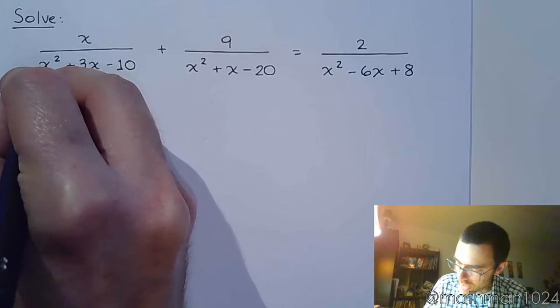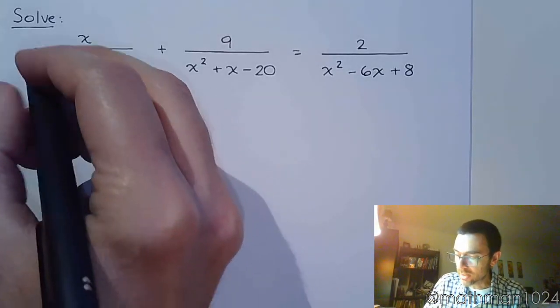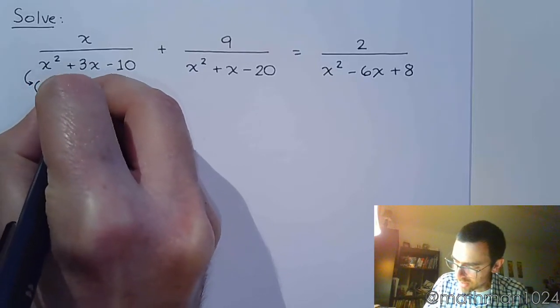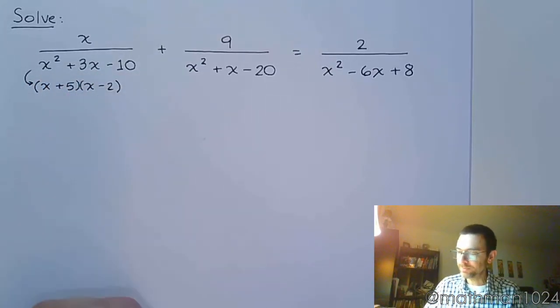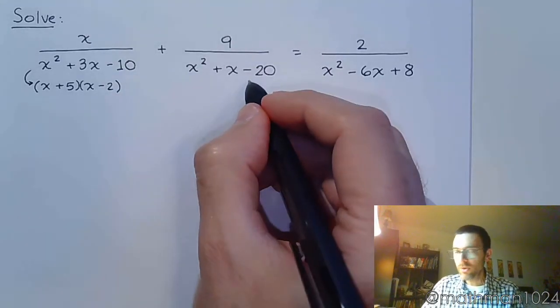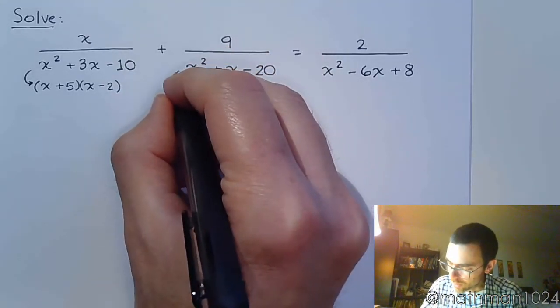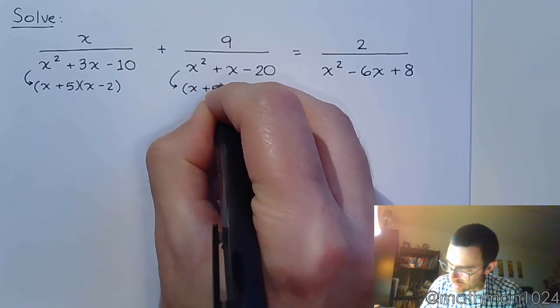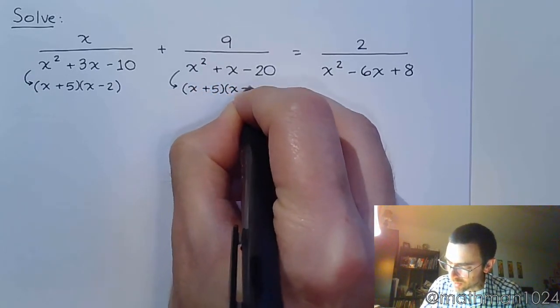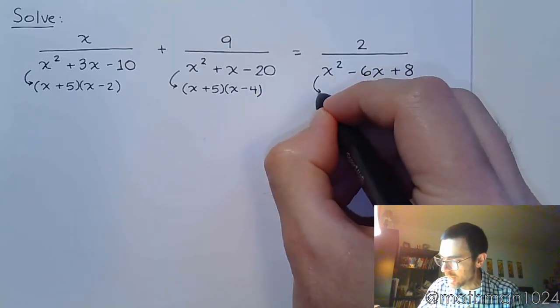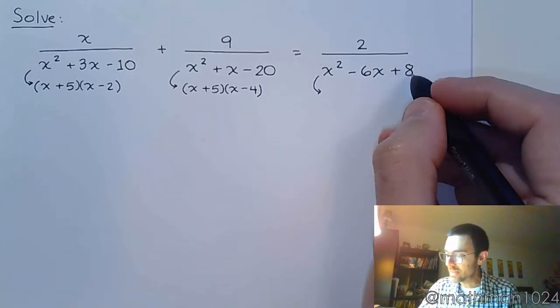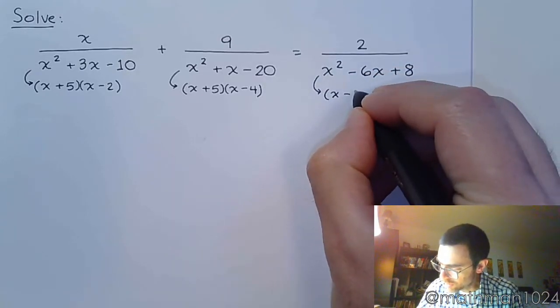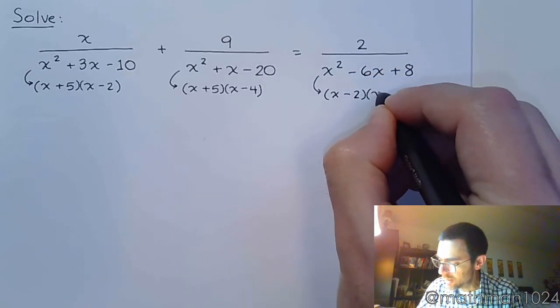So this guy will factor as, let's see, factors of 10 that subtract to 3. So we're going to have x plus 5 times x minus 2. Here we need factors of 20 that subtract to 1, so we'll have x plus 5 times x minus 4. And finally over here, factors of 8 that add to 6. So it's going to be 2 and 4, and these guys both need to be negative.